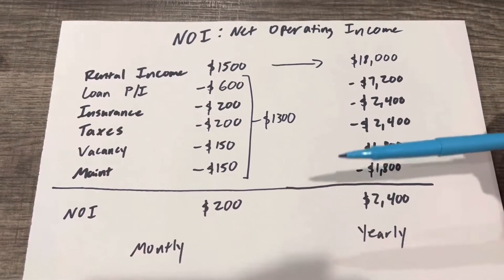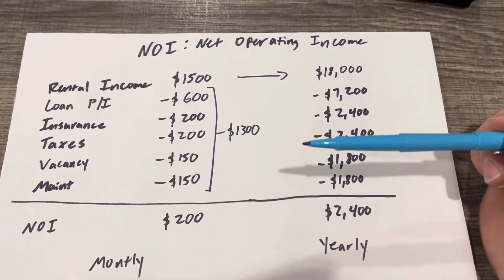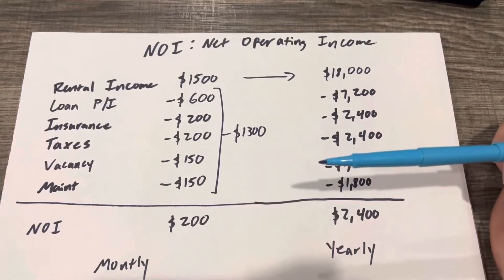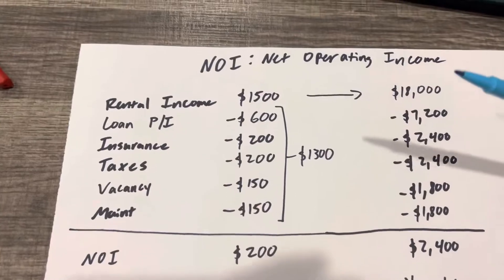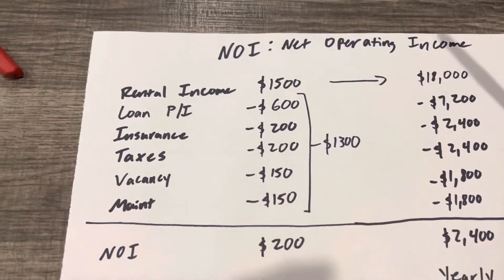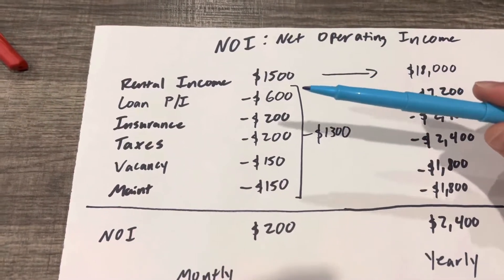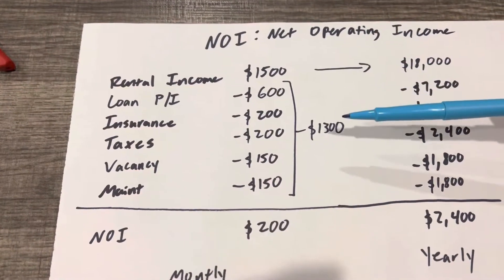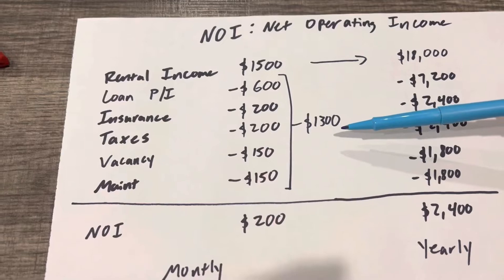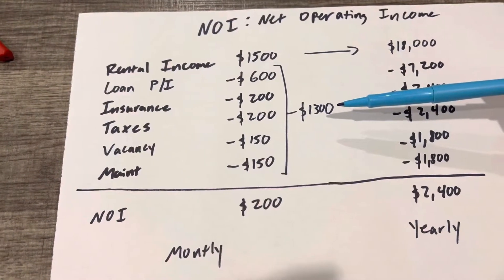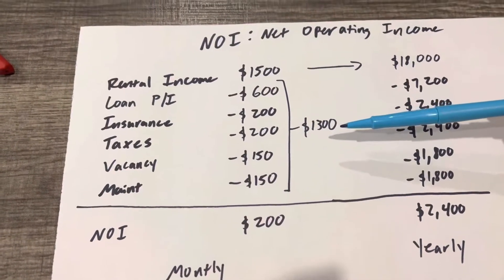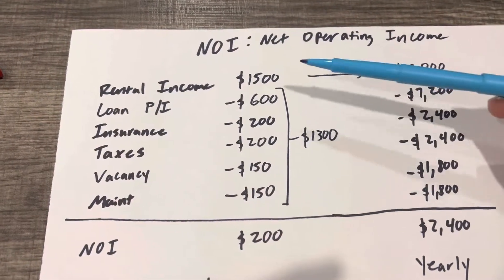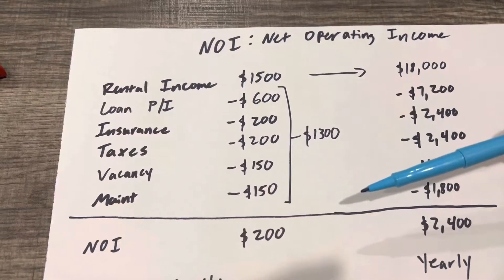This is a pretend scenario — we'll go into some real scenarios later from our portfolio, but right now we're just being conceptual and getting some ballpark figures. One of the biggest mistakes that new investors make is overestimating their rental income and underestimating their expenses, and obviously this can have a huge impact on how much you take home. For this example, we have a nice three-bedroom house renting for $1,500 a month.